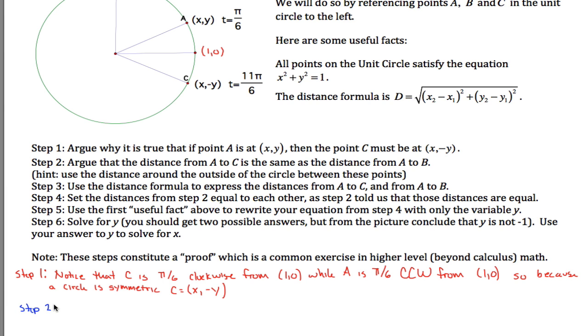Step 2. Step 2 says argue that the distance from A to C is the same as the distance from A to B. This distance right here is the same as this distance right here. And the hint it says is use the distance around the outside of the circle again. So consider the distance around the circumference of the circle. From A to C, that distance is, let's see from A to this point we know is pi over 6 and we just talked about from this point to this point is pi over 6. So it's two of these pi over 6's, pi over 6 plus pi over 6, which is 2 pi over 6, aka pi over 3.